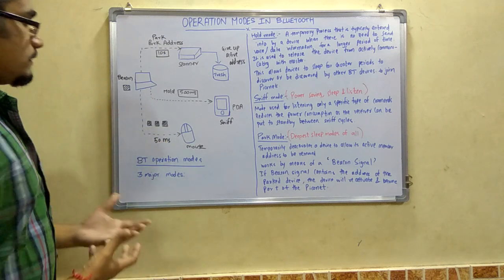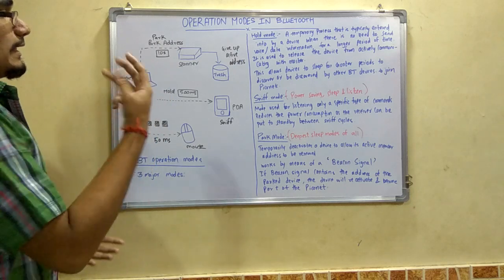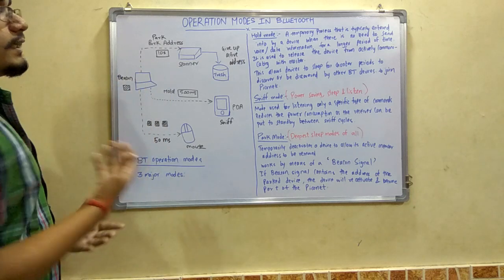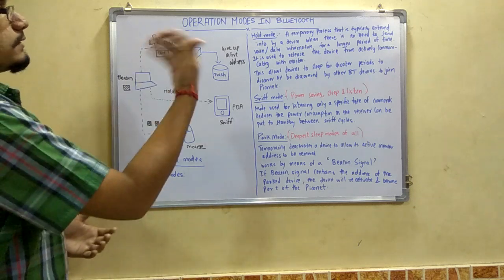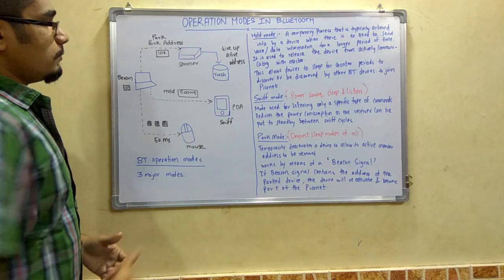The operation modes in Bluetooth consist of three major modes: hold mode, sniff mode, and park mode.